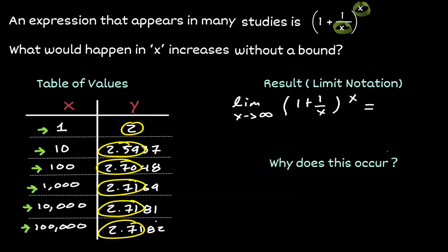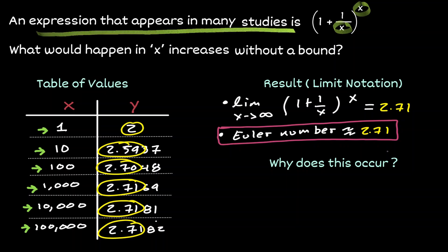And this value that we were approaching as x goes to infinity on the expression of 1 plus 1 over x all raised to the x, which we have said to be of a value of 2.71, is what we define as the Euler number. Remembering that this expression was something that appeared frequently in many studies in mathematics and sciences, the Euler number would appear in many studies in science and mathematics. So it was decided to use the letter E to represent the Euler number.